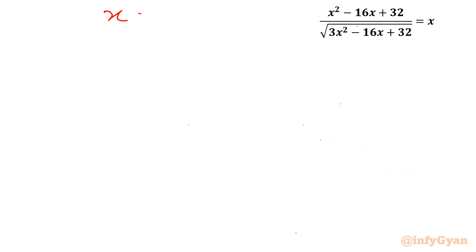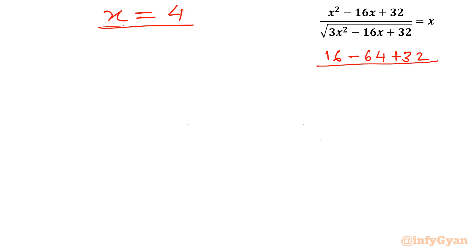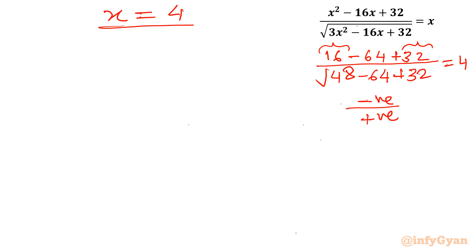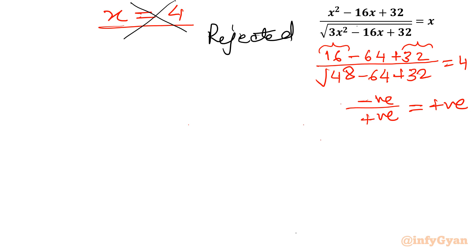Now let us verify x = 4. Substituting: numerator is 16 - 64 + 32 = -16 (negative). Denominator √(3·16 - 64 + 32) is positive. Right-hand side is 4 (positive). Since the left-hand side is negative and right-hand side is positive, this is impossible. So we reject x = 4 as well.